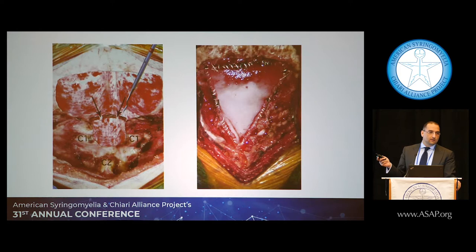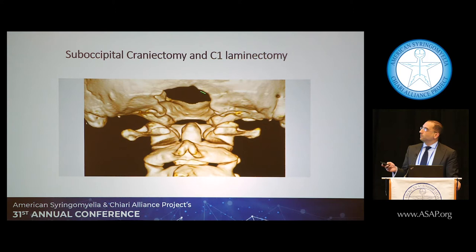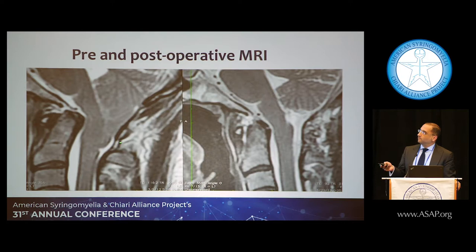The other approach augments the real estate: the dura is opened and a patch is sewn in, creating this triangular expansion. You now have a large spacious area for the cerebellum and spinal fluid flow. Here's the bony removal — the back part of C1 removed, which is why you can see C2 in front. The result is going from tight confines to open space — a great result.